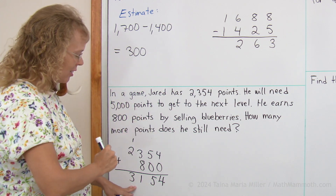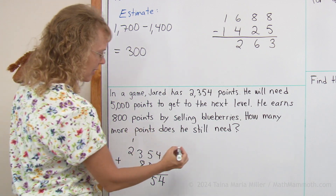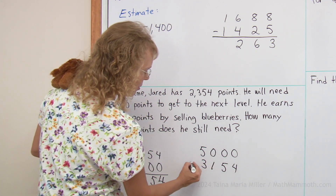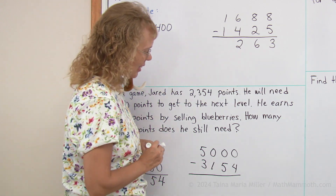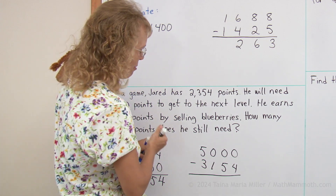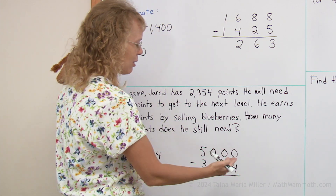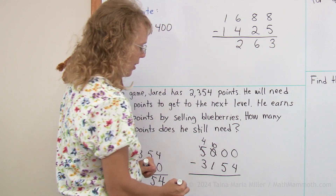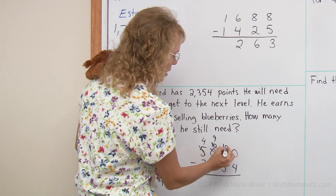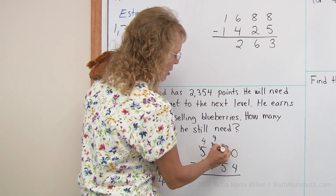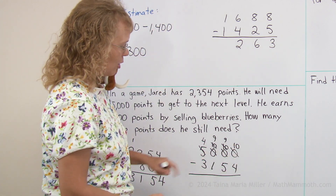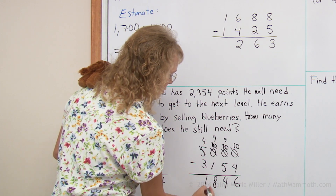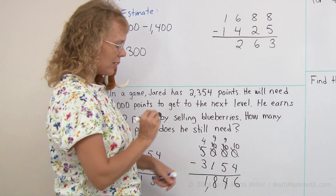We could add up from 3154 to 5000, or we can subtract. Let's subtract — we are finding the difference between his current point count and 5000. Here we go with regrouping. 0 minus 4 you cannot do, so we need to go all the way to the thousands: take 1000, leave 4 there. Then 10 hundreds, take one and put it over here, and take one of the tens. You get 9s and 10s: 10 minus 4, 9 minus 5, 9 minus 1, 4 minus 3. He would need 1846 points more.